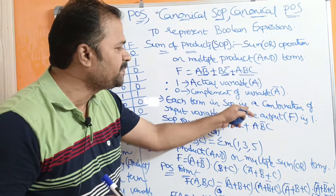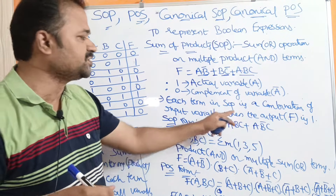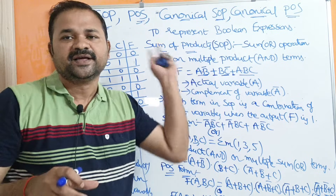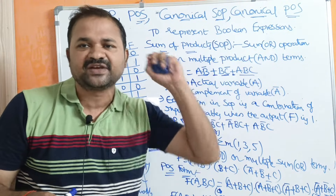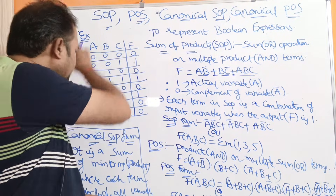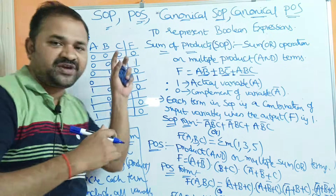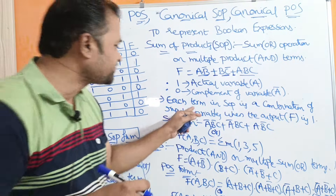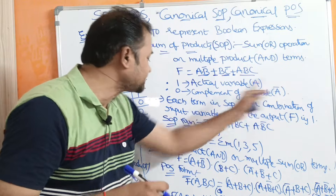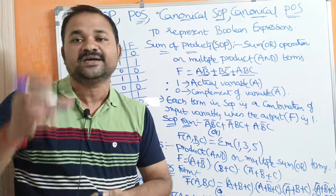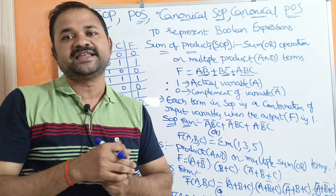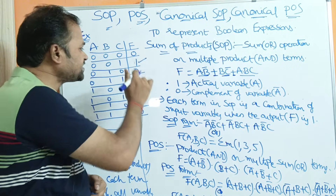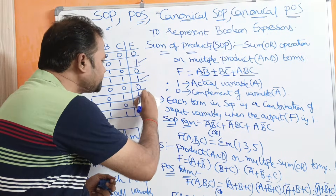Each term in SOP is a combination of input variables when the output F is high, that is 1. Here we have a truth table, and we have to represent this truth table in SOP form as well as in POS form. F is 1 in three cases, so we have to take those combinations of variables in SOP.